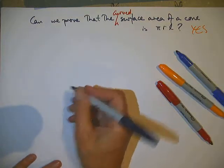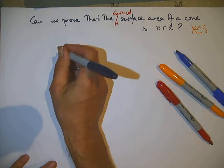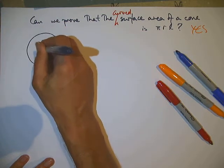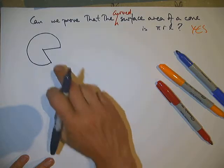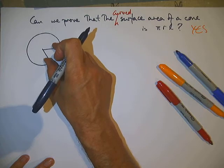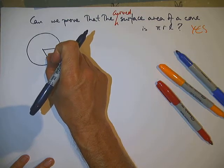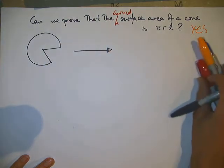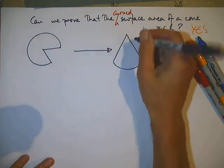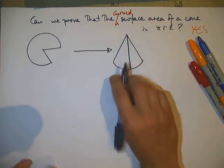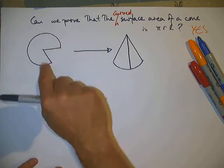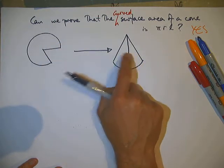First of all, we need to consider what shape would be the net for the curved surface of a cone. Imagine you take a circle and you cut a beak slice out of it. If you push those two radii together, you get a cone. Start with a circle, cut a slice out of it — a slice of pie — and you can fold it to get that shape.